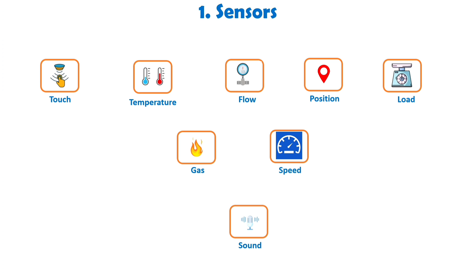Advanced sensors have the capability to measure a wide range of complexities. In some IoT devices, multiple sensors are bundled together to collect diverse data and perform multiple functions. Take smartphones, for example, which incorporate sensors such as GPS, fingerprint scanners, tilt sensors, motion sensors, and various others into a single device. Thanks to technological advancements, sensors today are becoming increasingly compact, smart, and efficient. When selecting sensors, it's important to consider the specific purpose you aim to achieve.